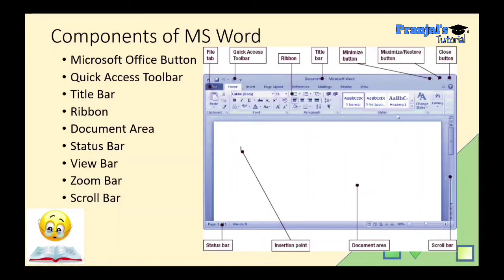Next we have the Ribbon. The Ribbon contains different tabs, and each tab has options organized in groups. For example, cut, copy, paste, and format are options found in the Clipboard group. Bold, Italic, Underline, font, color, and size are options found in the Font group. The Ribbon is divided into tabs, and the tabs contain different groups with the same type of options.